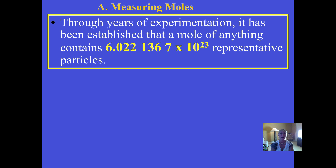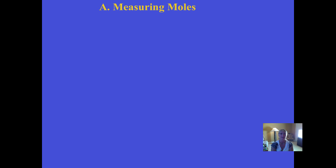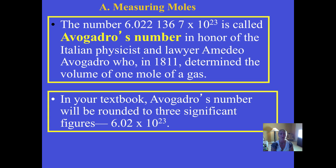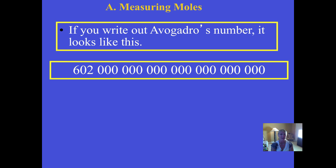Someone established that there are 6.022 1367 times 10 to the 23rd things in a mole. You could have a mole of anything, but the representative particles we refer to are molecules, atoms, ions, and formula units. Avogadro's number is the other name we give to this number because Amadeo Avogadro determined the volume of one mole of gas in those early experiments. We round that number to 6.02 times 10 to the 23rd, though some textbooks use 6.021.